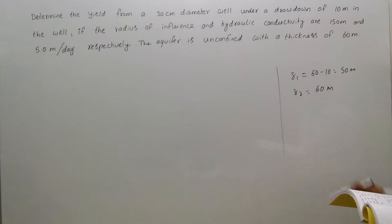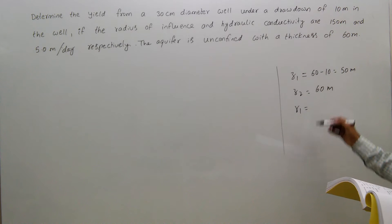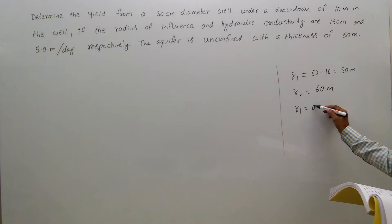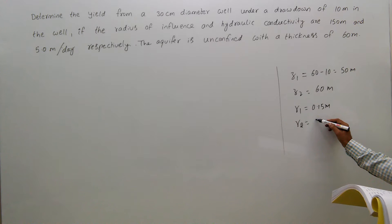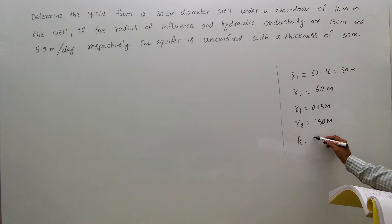r1 is 15 centimeters, which means 0.15 meters. r2 equals the radius of influence, 150 meters. k equals 5 meters per day.